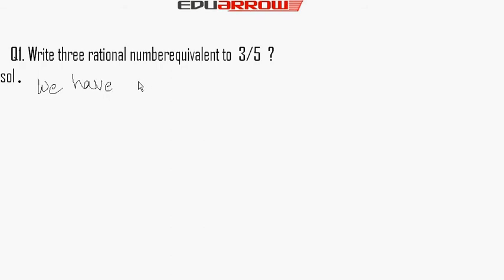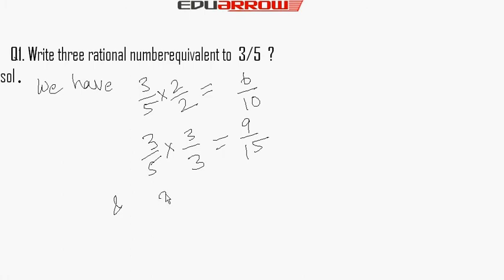Multiply by the same number in numerator and denominator. Take any number, let us take 2. Multiply by 2/2, the answer is 6/10. Another: 3/5 multiplied by 3/3 gives 9/15. And 3/5 multiplied by 7/7 equals 21/35.